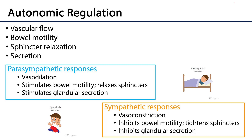In terms of autonomic regulation of the GI system, there are four basic parameters to consider: vascular flow, motility of the bowel, relaxation of sphincters, and glandular secretion. Parasympathetics are the rest-and-digest division. They lead to vasodilation — increased blood flow to the gut tube — stimulation of bowel motility by enhancing peristalsis, relaxation of sphincters to allow materials to move through the bowel, and stimulation of glandular secretion for digestion.